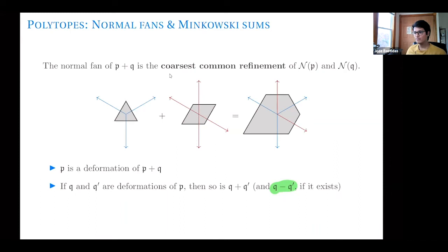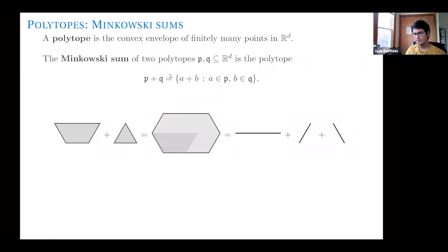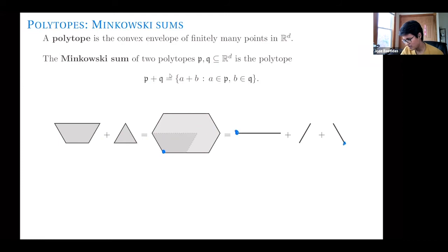Question: in the first example expressing the hexagon as the Minkowski sum of line segments, does the position of the zero matter? Yes — if we were to give coordinates, the coordinates of each resulting point are the sum of the coordinates of the contributing points. So coordinates here are important, but we're not being very careful now because later we'll consider things modulo translation.